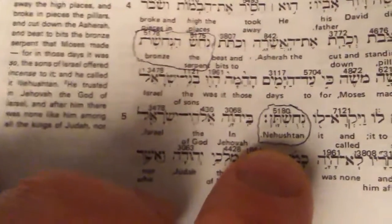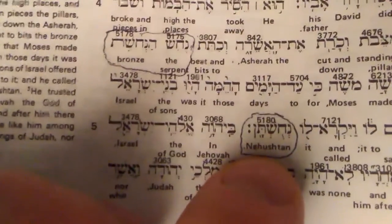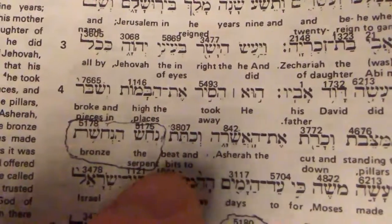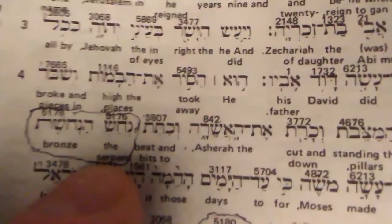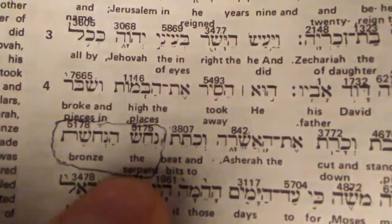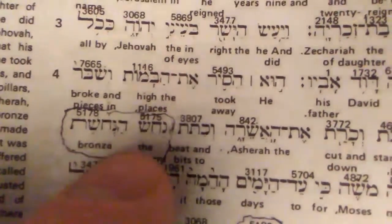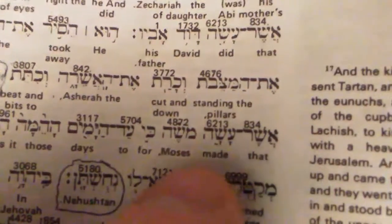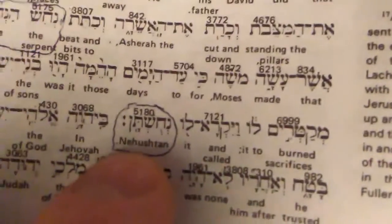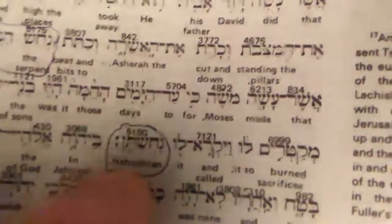It says Moses made a serpent of copper. That actually later becomes an object of worship in 2 Kings. In 2 Kings chapter 18, verse 5, it says Nuhushtan — that's what they called it — and they were worshiping it, and Hezekiah beat it into bits.